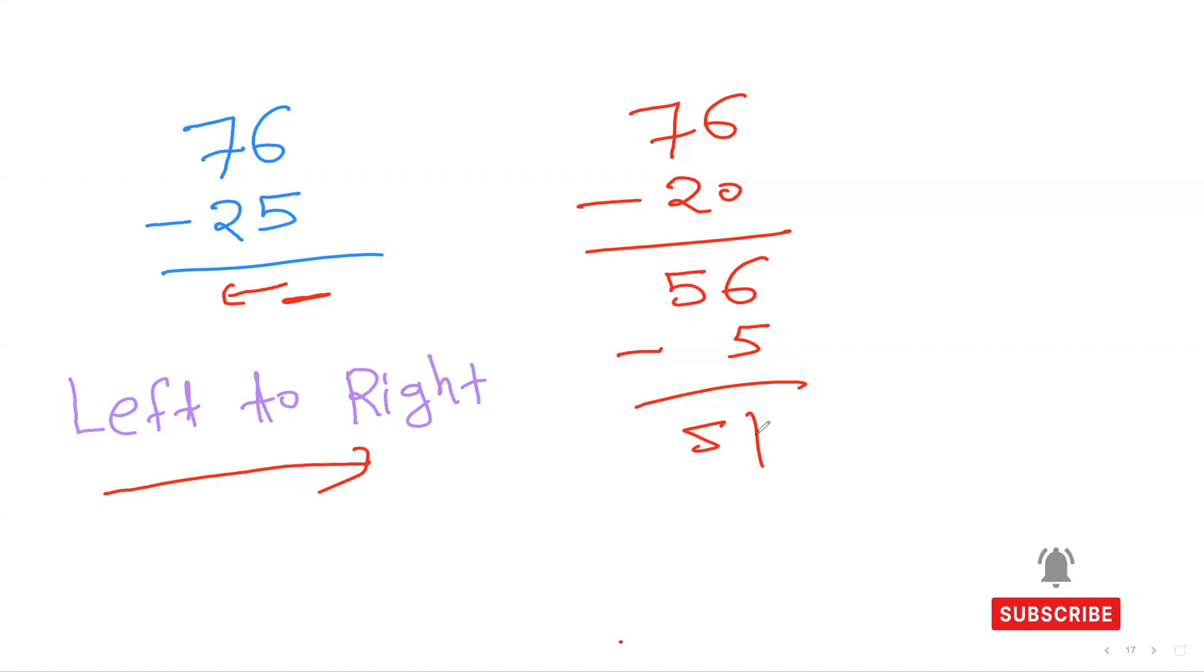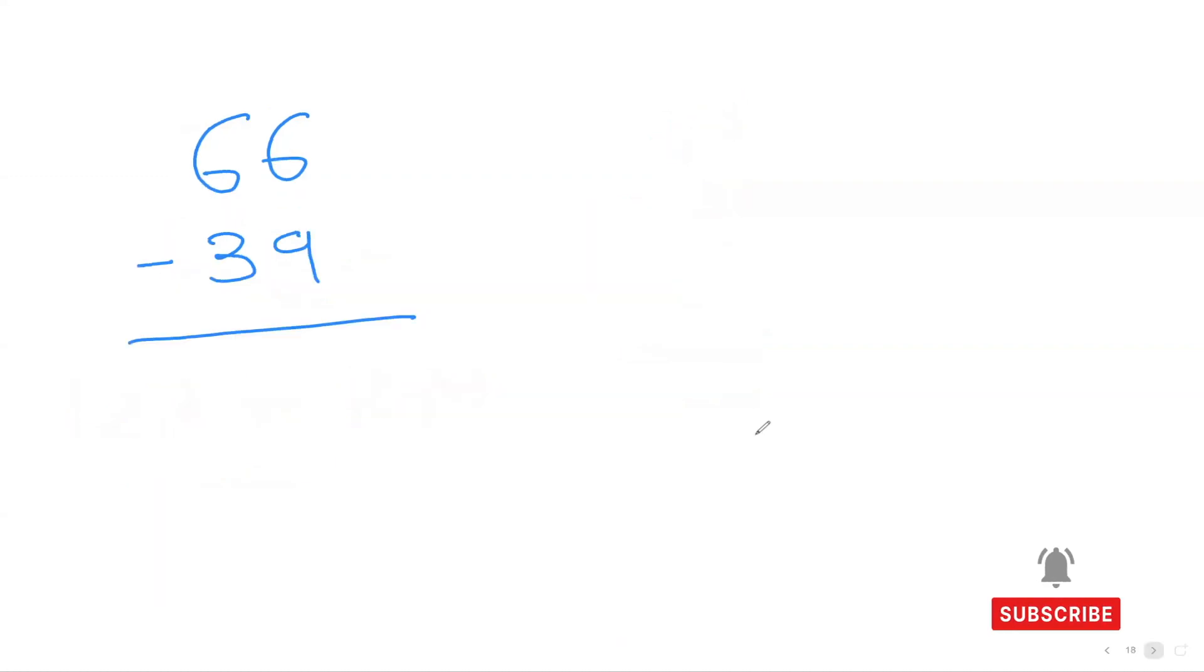I believe you know the process now. A little bit of creativity is going to make you super fast. For 66 minus 39, I can see that 39 is very close to 40, so I'll do 66 minus 40, which equals 26.